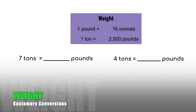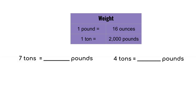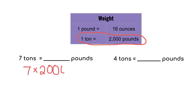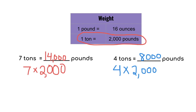Now let's move on to weight. Here we have one pound equals 16 ounces, and one ton equals 2,000 pounds. We will use those conversions to help us solve these problems. The first one has seven tons, and we're converting to pounds. So we start with seven and multiply, because we're going from a larger unit of tons to a smaller unit of pounds. We multiply by 2,000 and get 14,000. So seven tons equals 14,000 pounds. For the next one, we have four tons, so four times 2,000 gives us 8,000. Four tons equals 8,000 pounds.